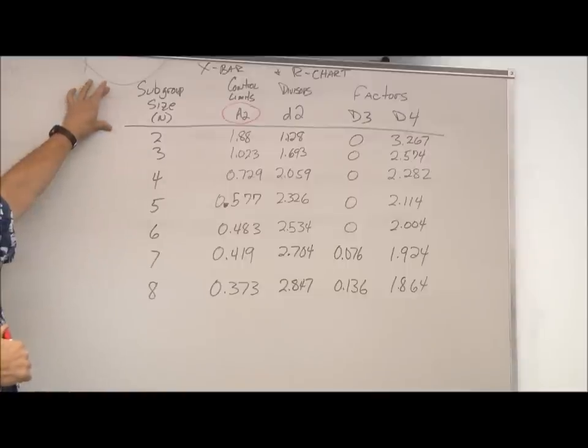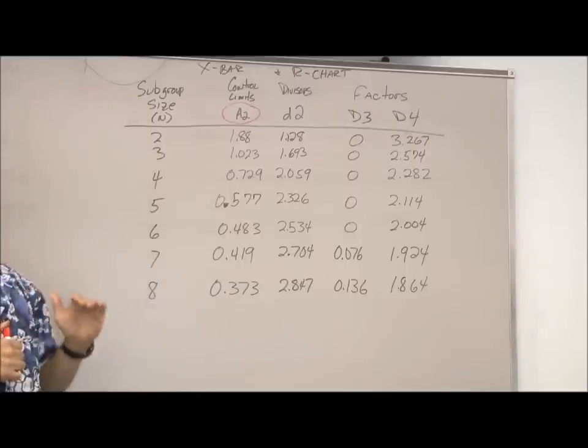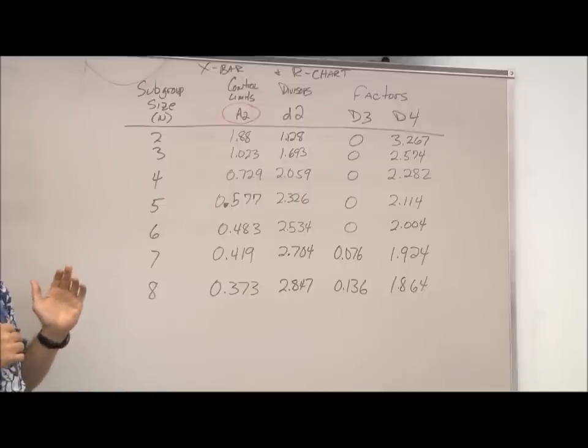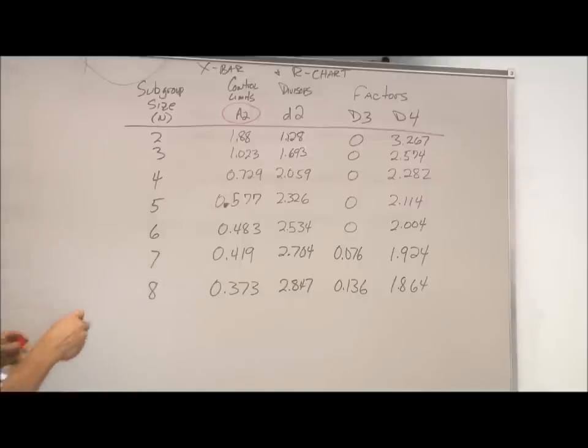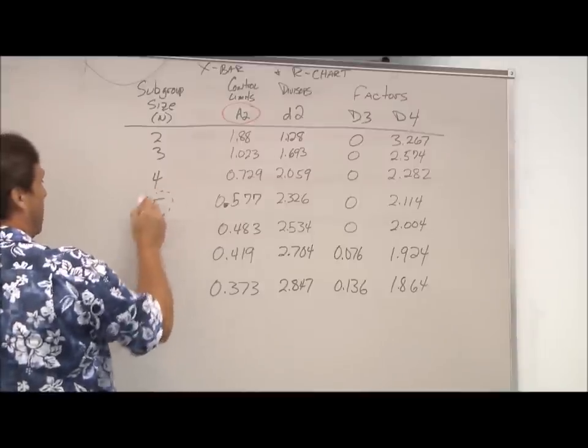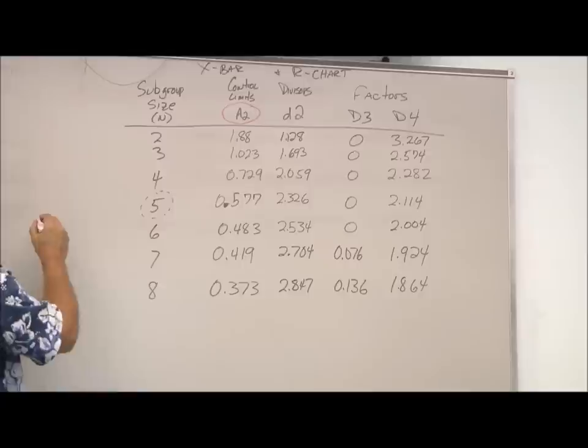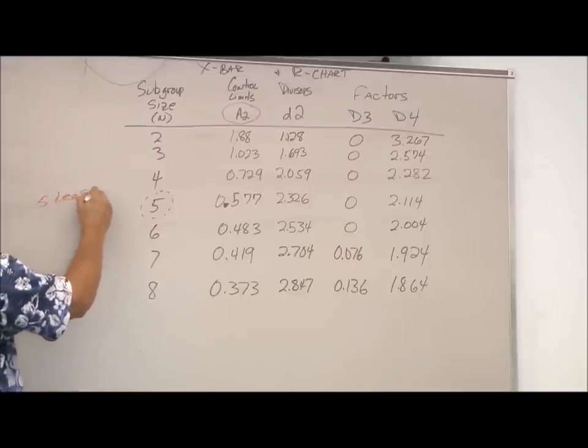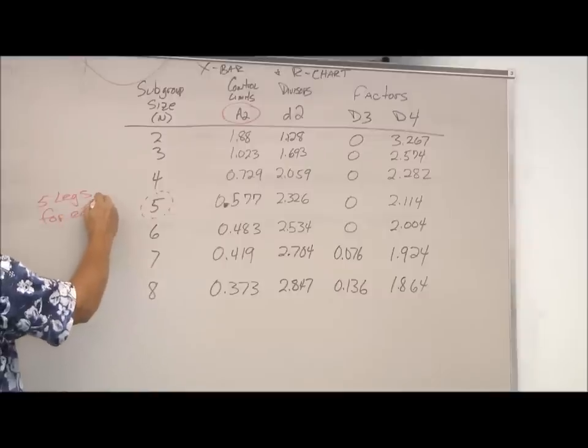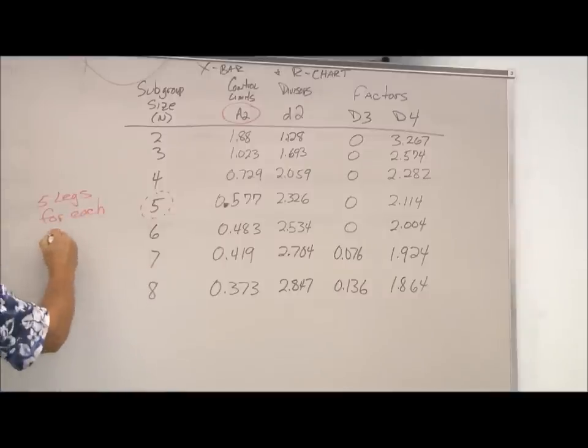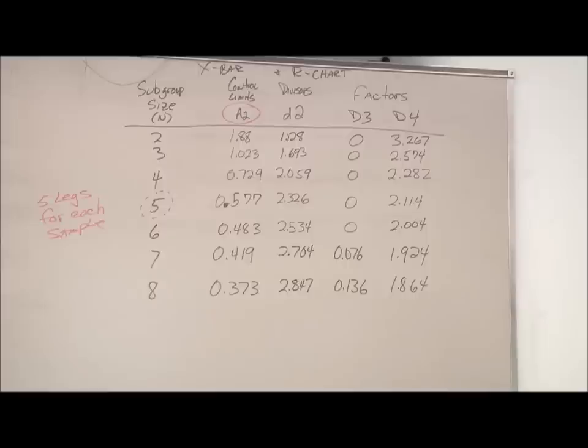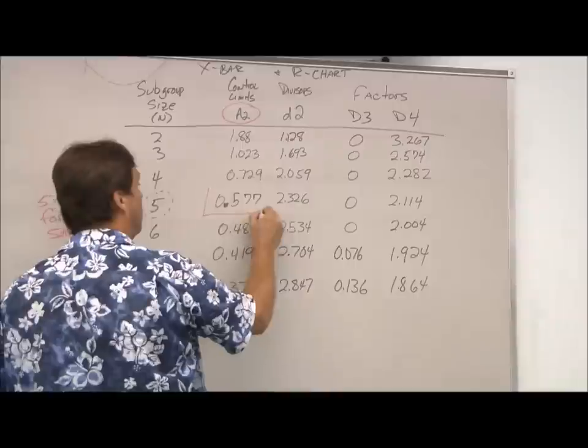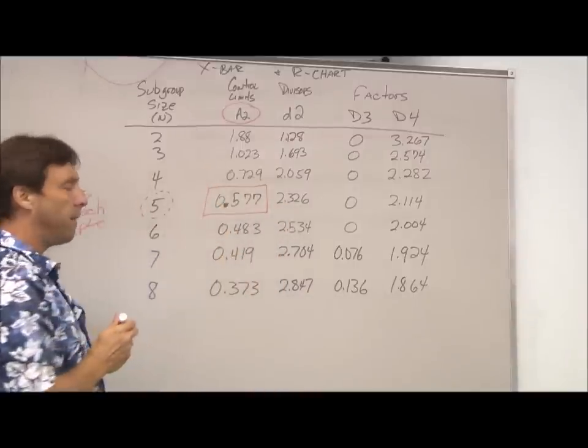Now, our subgroup size is we took one measurement every hour for eight hours, but the key is we took a sample size of five legs within that. So we would use the five here because we measured five legs for each sample. So that's our subgroup size. It's how many we had together to get our mean. So this gives us an A2 of 0.577.